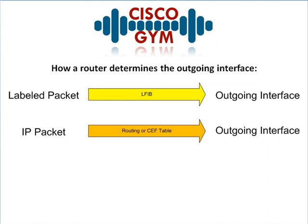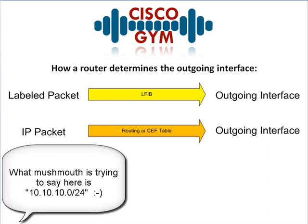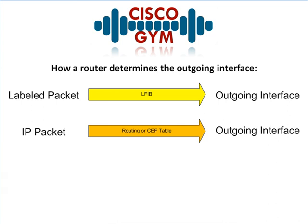Now if you receive a packet that is untagged or unlabeled, it's not going to go to the LFIB because there's no reason — it doesn't have a label. So what it's going to do is a normal routing lookup and it's going to go ahead and look at the routing table or the CEF table. Since enabling CEF is a prerequisite of running MPLS, it's actually going to go to the CEF table. So it gets an IP packet, say for 10.10.10.0/24, and it says how do I route this — goes to the CEF table, and it says send that out Ethernet 0.